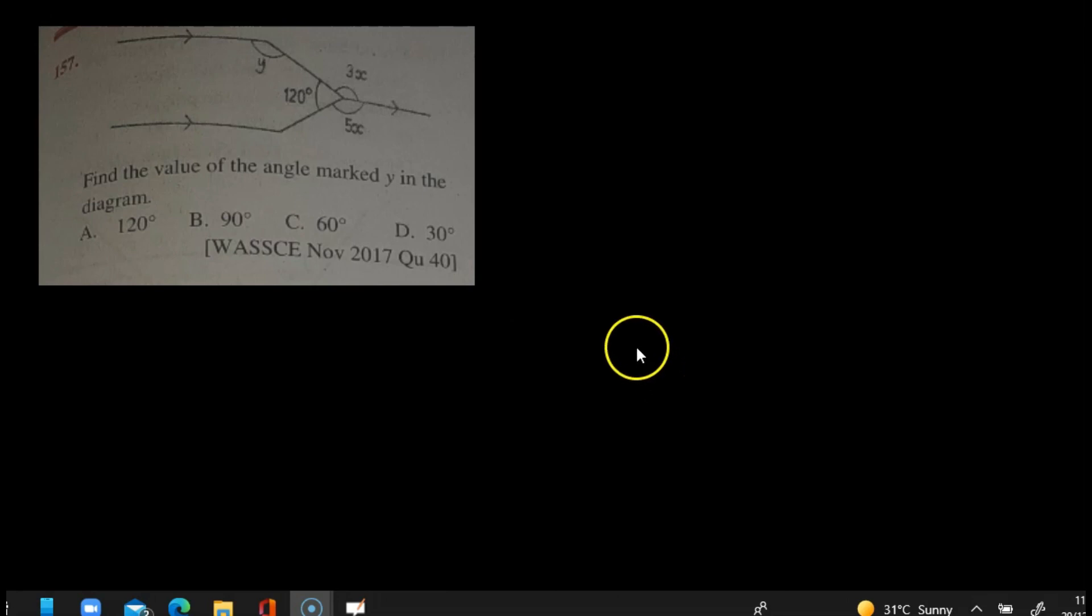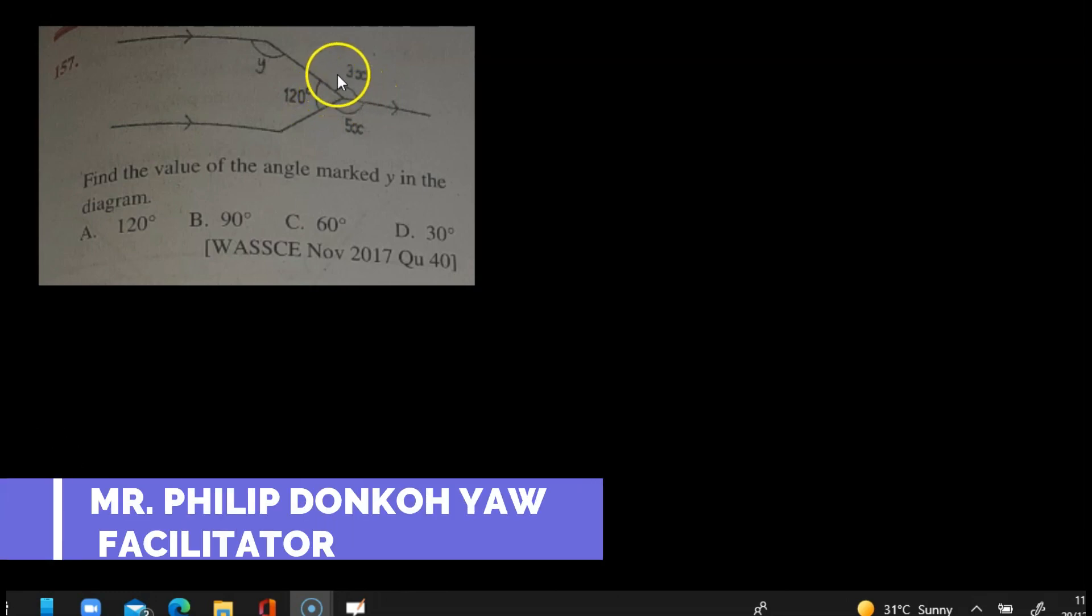Now our first question as you can see on the screen is a diagram given and it reads find the value of the angle marked y in the diagram. We have our possible answers there, but the way forward in solving this question is first to look at finding the value of x, then from there we can proceed to find the value of y.